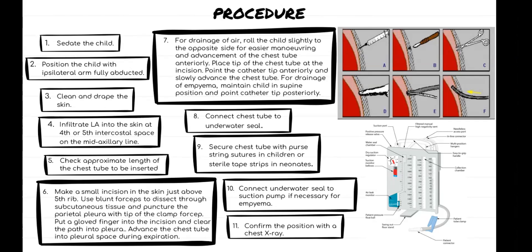Point the catheter tip anteriorly and slowly advance the chest tube. However, for drainage of empyema, maintain the child in the supine position and point the catheter tip posteriorly. Then connect the chest tube to the underwater seal and secure the chest tube with purse-string sutures in children or sterile steri-strips in neonates, and connect the underwater seal to a suction pump if necessary for empyema.